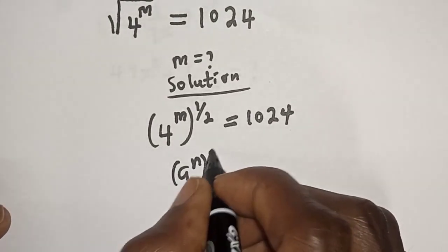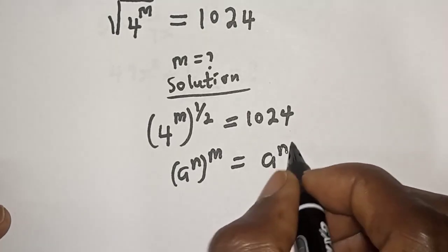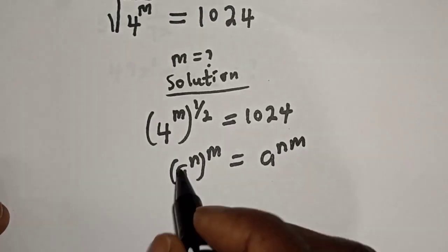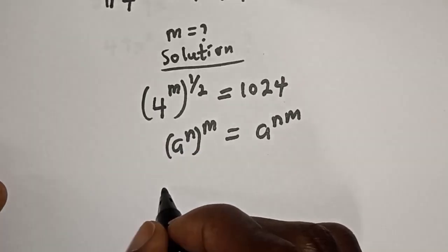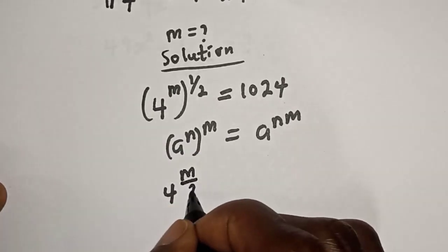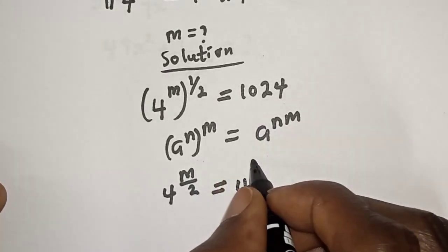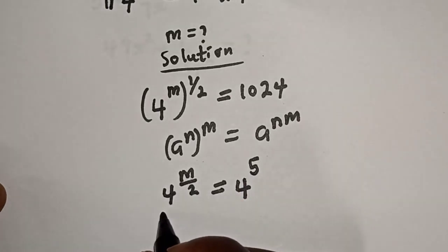to the power of n, this is equal to a raised to power n times m. So we have four raised to power m over two is equal to 1024, which can be written as four raised to power five, and they